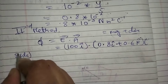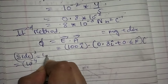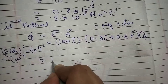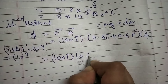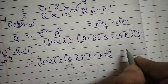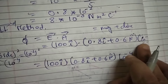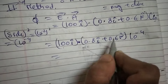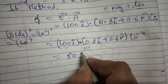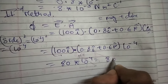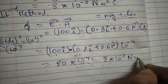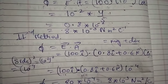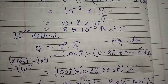The area vector has magnitude equal to the area of the square, which is 10⁻⁴ meter squared. So flux = 100i · (0.8i + 0.6k) × 10⁻⁴. Taking the dot product, i · i = 1 and i · k = 0, so we get 100 × 0.8 × 10⁻⁴ = 8 × 10⁻³ Newton meter squared per Coulomb. This confirms our answer.